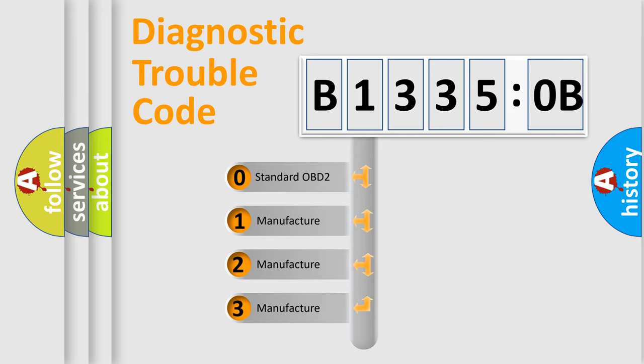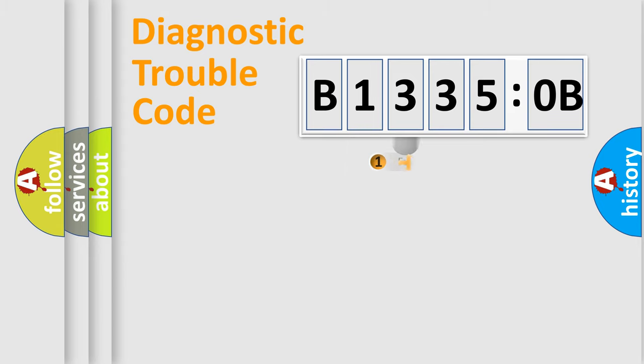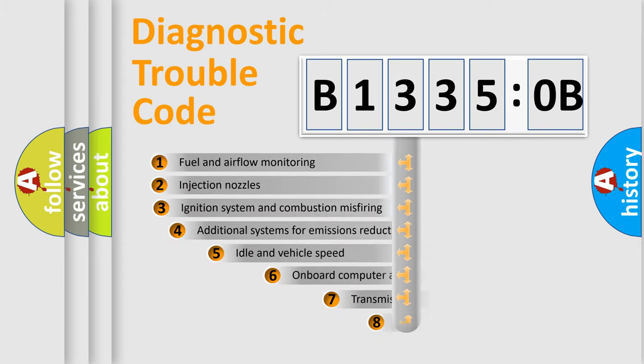If the second character is expressed as zero, it is a standardized error. In the case of numbers 1, 2, 3, it is a more specific expression of the car-specific error.